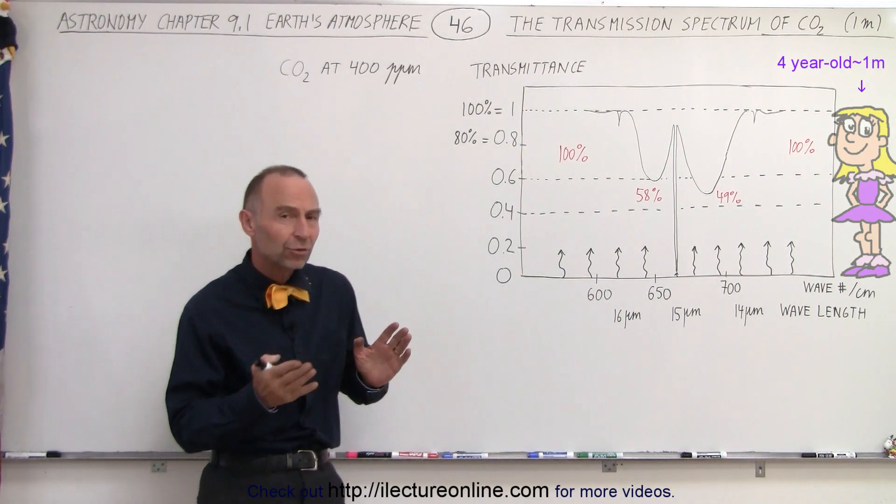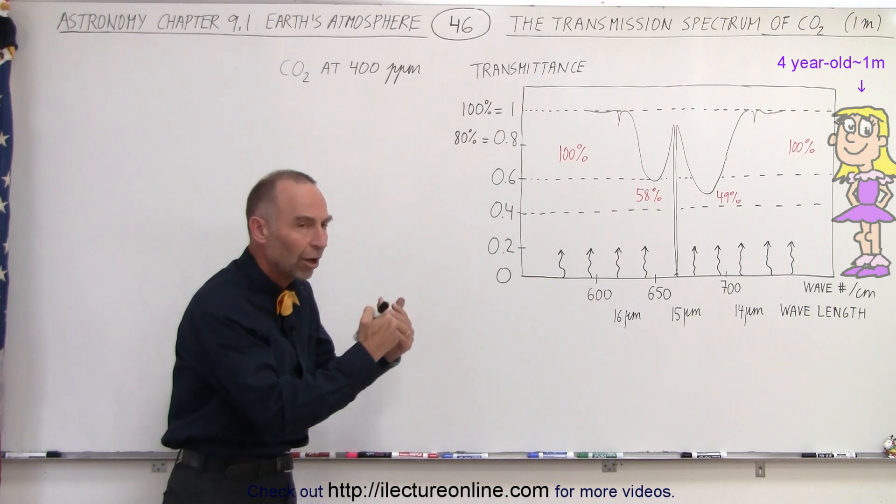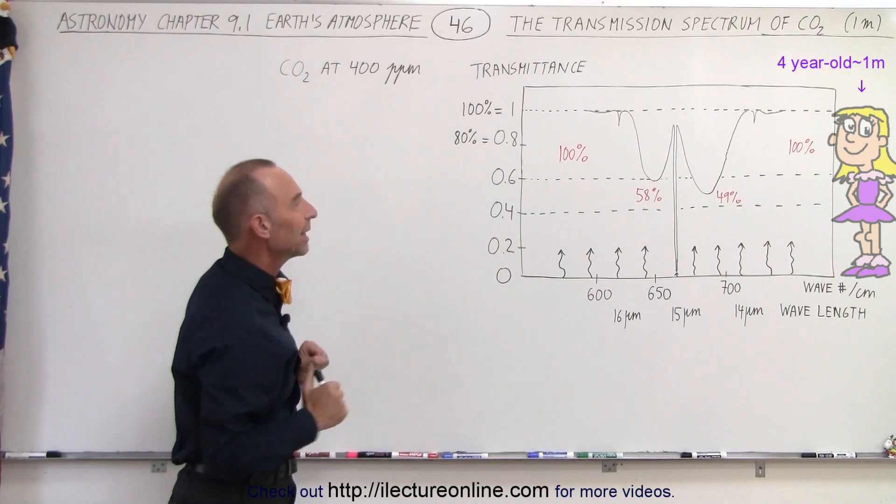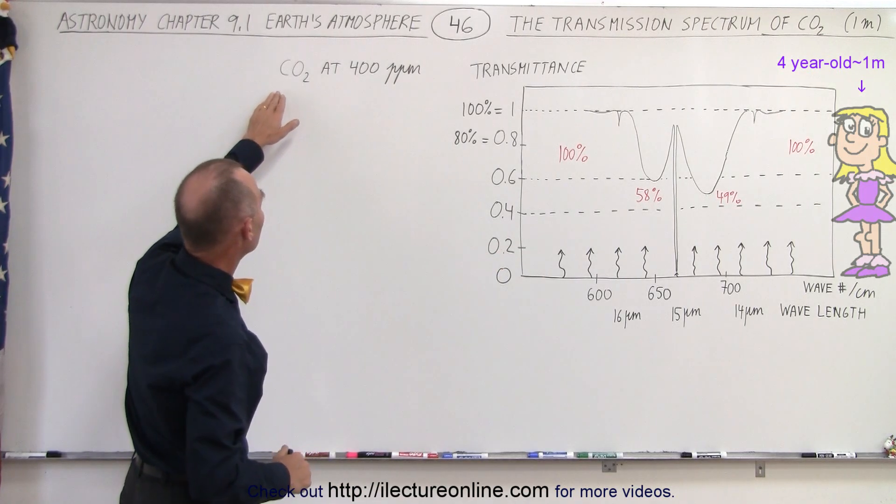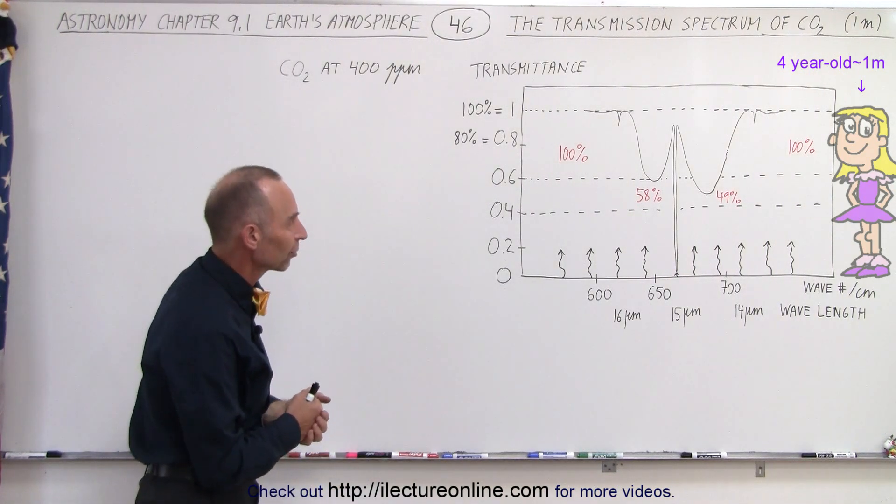So what we're going to do now is turn the tables from the previous video and take a look at the transmittance of the energy coming from the surface of the Earth when we have carbon dioxide in the atmosphere. In this case, we're going to take carbon dioxide levels at about 400 parts per million, which are close to the current levels.